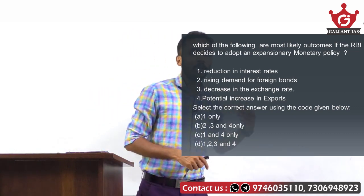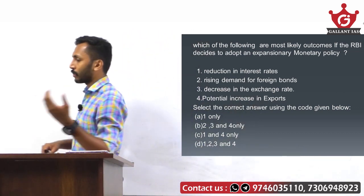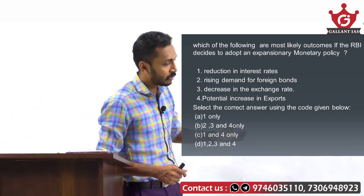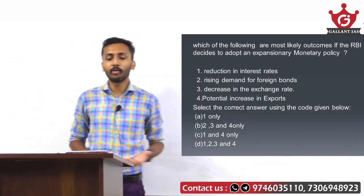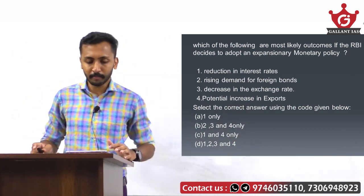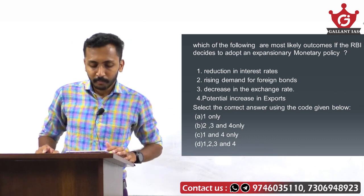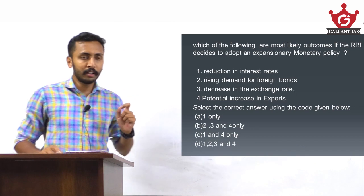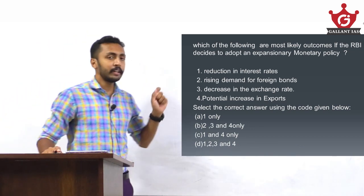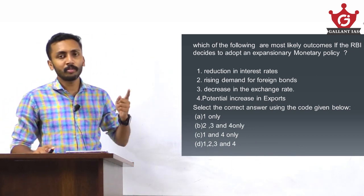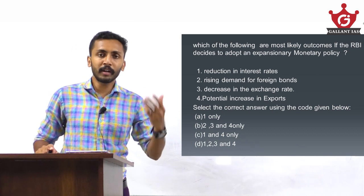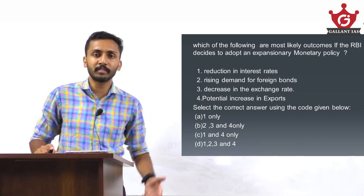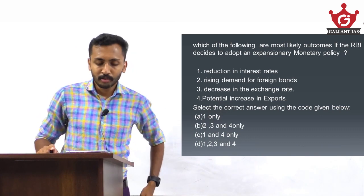Banks will give more loans and will have enough money to give loans because of low interest rates. The public will take more loans. So reduction in interest rate is the first immediate outcome of expansionary monetary policy — RBI automatically reduces interest, which affects the interest rates of banks.